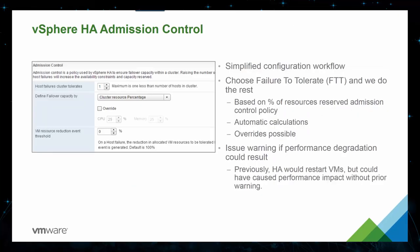In regards to vSphere High Availability, or HA, we've simplified the configuration for it. You now have a very simplified workflow for configuring HA. There are not as many settings and configurations that have to be done like there used to be with 6.0 Update 2 and previous versions. You simply select the number of failures to tolerate based on percentage of resources reserved, automatic calculations, and number of overrides possible. Then it does the rest, including providing warnings if performance degradation could result with those settings.